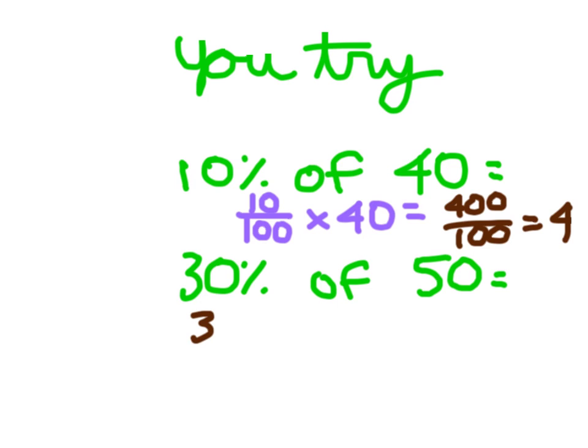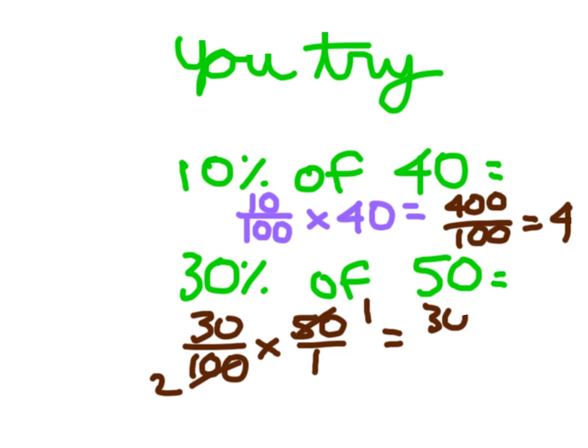30% of 50: 30 over 100, times 50 over 1. 50 cancels to become a 1, 100 cancels to become a 2. So we've got 30 over 2, or 30 divided by 2, which equals 15. 30% of 50 is 15.